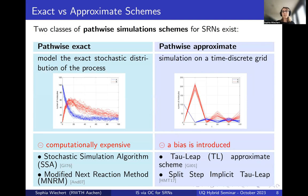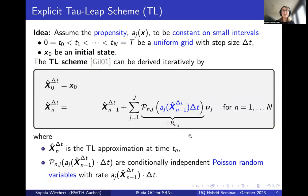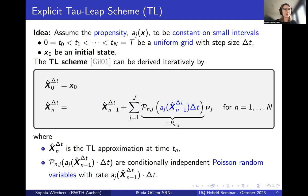To simulate stochastic reaction networks we have two general options. The exact process models the exact stochastic distribution via waiting times — for Poisson processes these are exponential — and the famous Gillespie's algorithm or SSA falls into this category. However, this approach becomes computationally expensive whenever one reaction channel fires frequently. To overcome this, we have approximate schemes such as the tau-leap scheme, which models the process on a discrete time grid at lower computational cost but introduces an additional bias term.